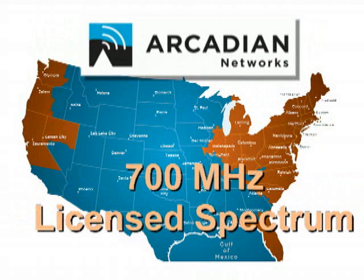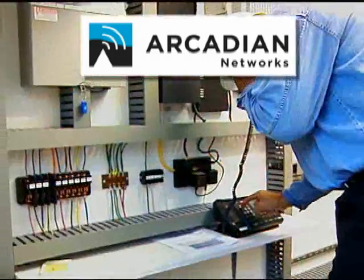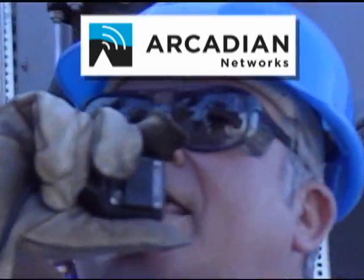Arcadian Networks' 700 MHz licensed spectrum delivers a converged IP network with voice and data communications for fixed and mobile applications.